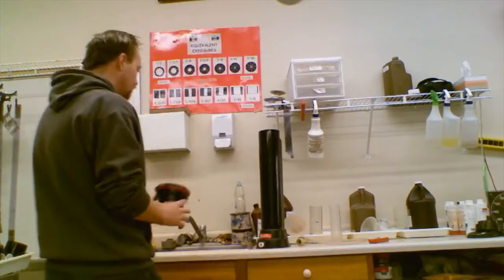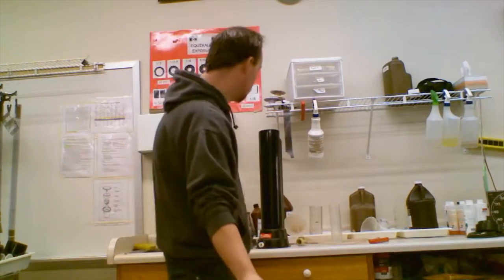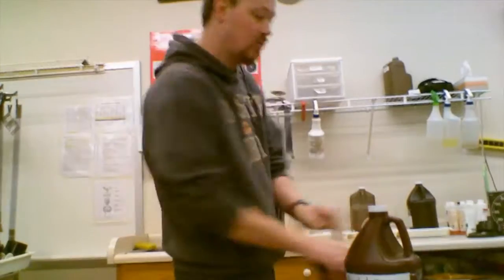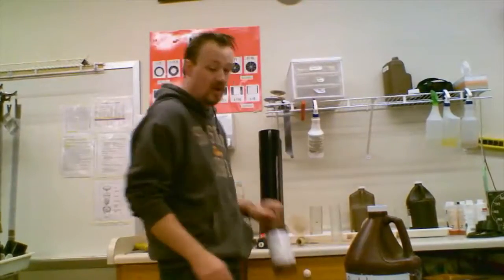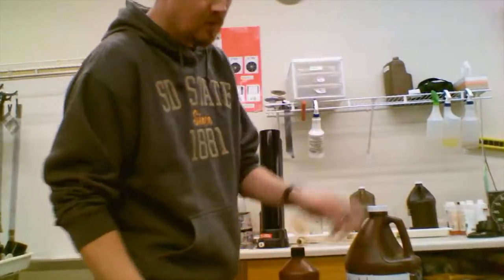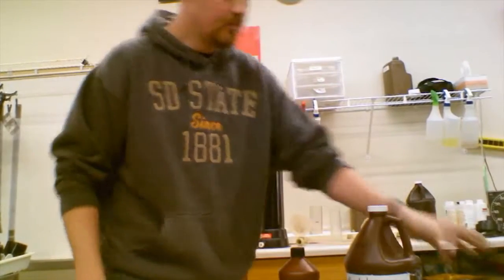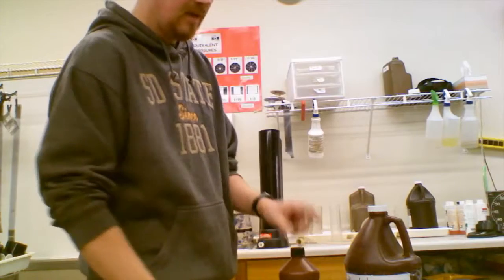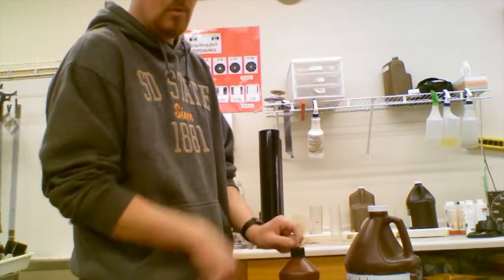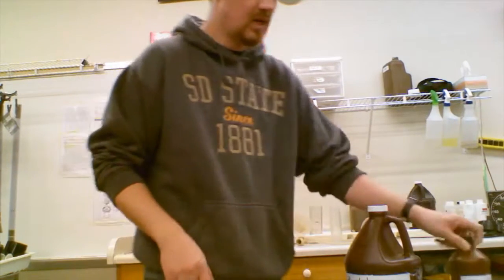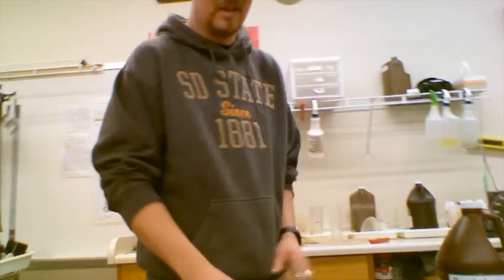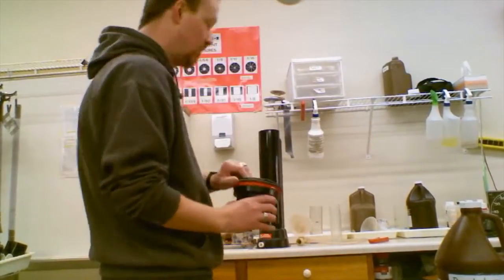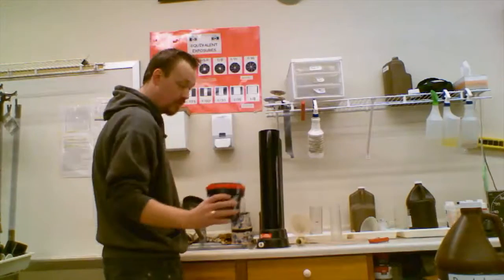Then I have an interesting system here—we have our developer which is round one, and then developer round two. After you use it from round one, you can pour it back into round two. After you use it from round two, you pour it down the drain. That way we get one more use out of it—nothing has been affected quality-wise so far.